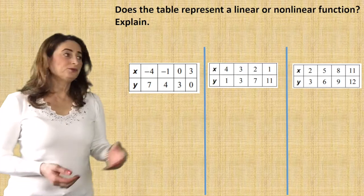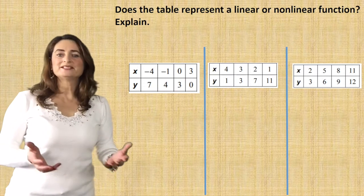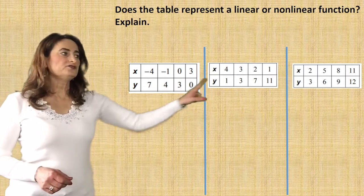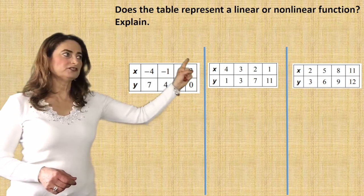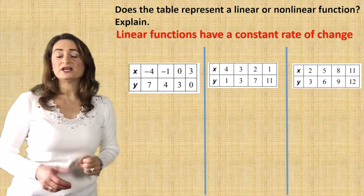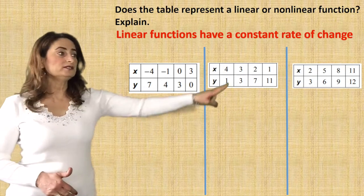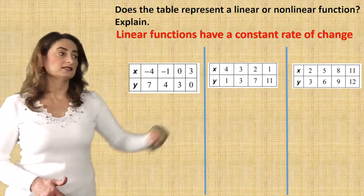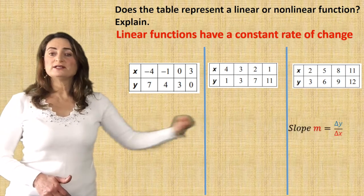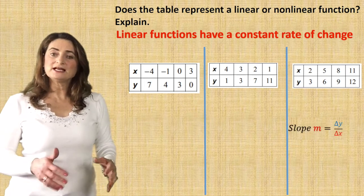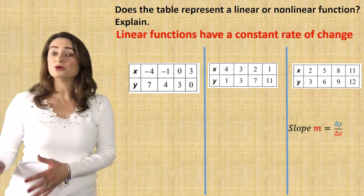Now from a table — does the table represent a linear or nonlinear function? Explain. Here are three tables. Remember, linear functions have a constant rate of change, and rate of change is another name for slope. The slope is the change in y divided by the change in x. Is that slope constant? Is the change the same between two points?